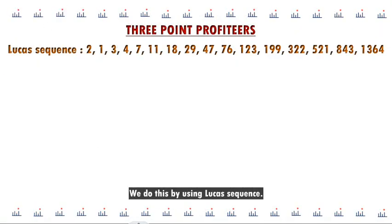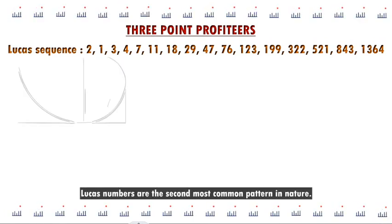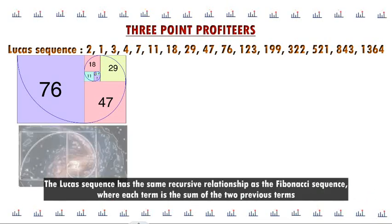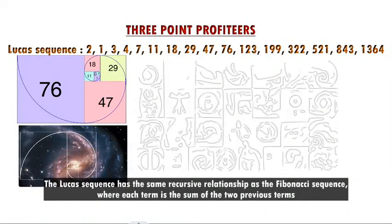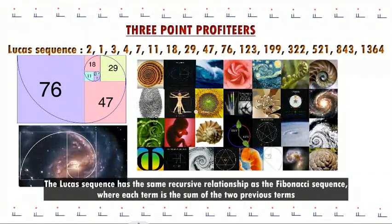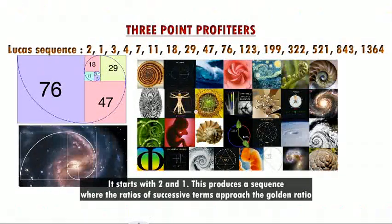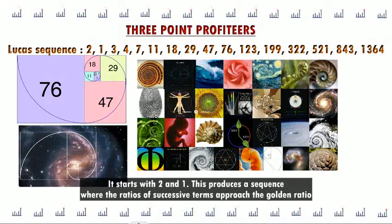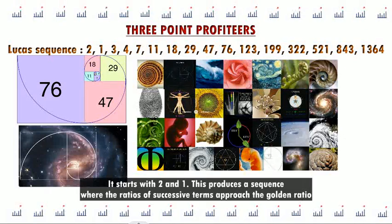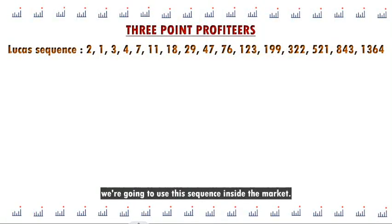We do this by using the Lucas sequence. Lucas numbers are the second most common pattern in nature. The Lucas sequence has the same recursive relationship as the Fibonacci sequence, where each term is the sum of the two previous terms — it starts with two and one. This produces a sequence where the ratios of successive terms approach the golden ratio. We're going to use this sequence inside the market.